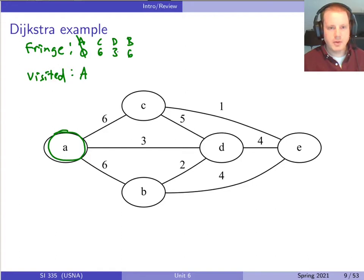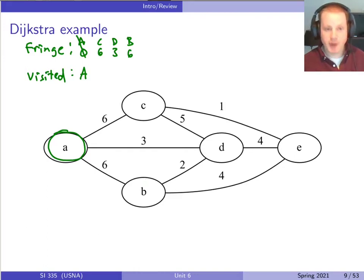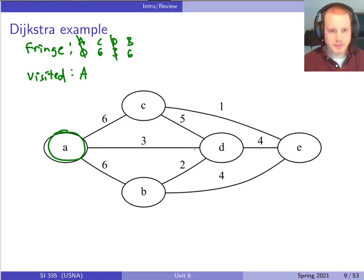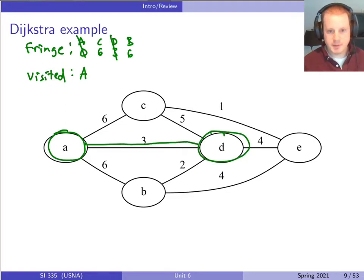Now there are three things on the fringe. If we were doing a depth-first search or breadth-first search, the order would depend on how things are stored — you could visit any of these nodes next. But in Dijkstra's algorithm, it's using a priority queue for the fringe, so it's always going to take the closest one remaining. So here, it's definitely going to visit D next, and we take it off the fringe and visit that node.